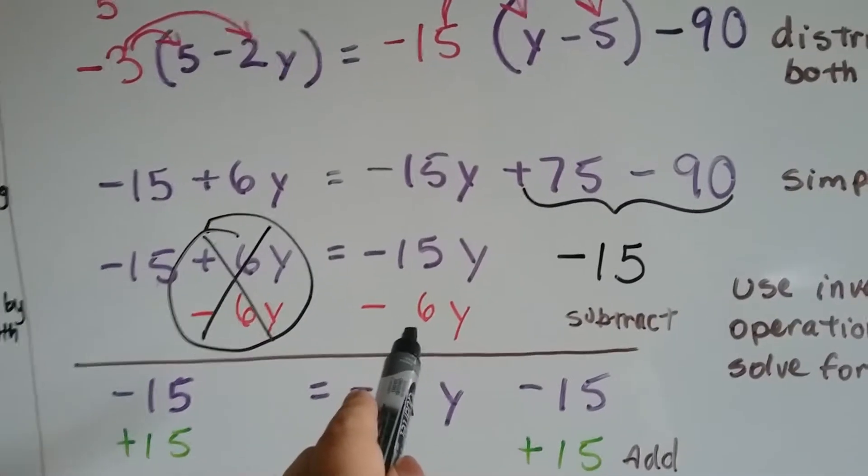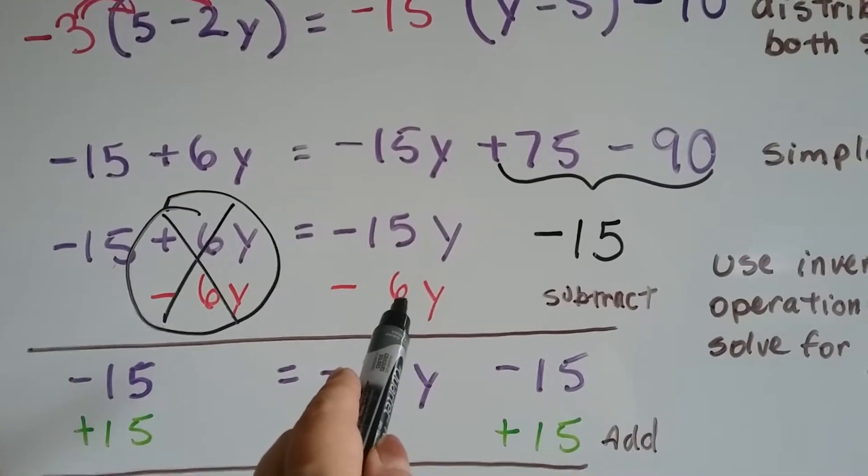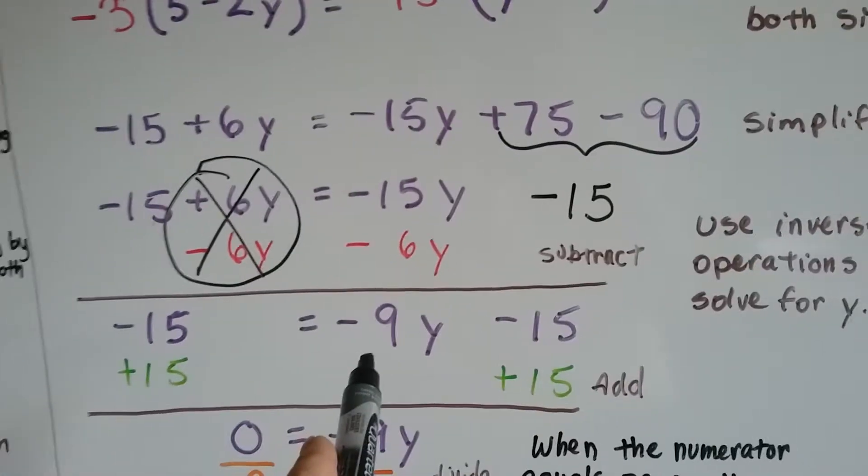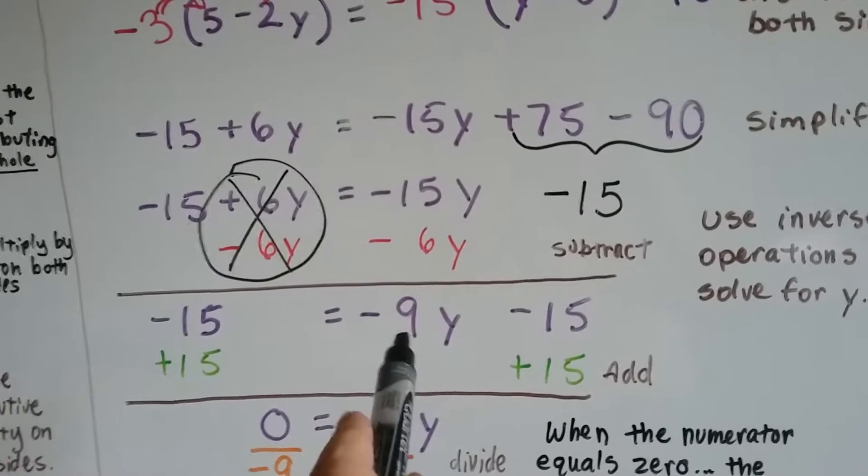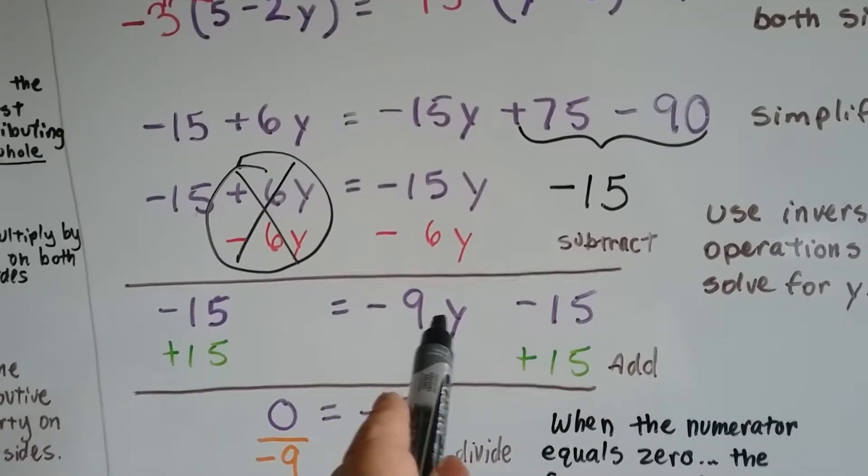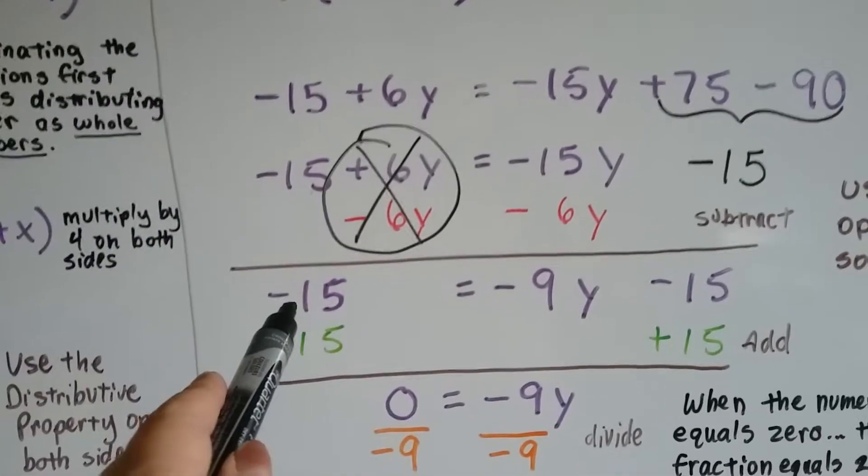But then I have to do the same thing on this side of the equal sign. Negative 15y, take away a 6y, is going to give us negative 9y. Because we're taking away six negatives, we're getting closer to zero. So we have negative 9y. We drop down that negative 15. We drop down this negative 15.